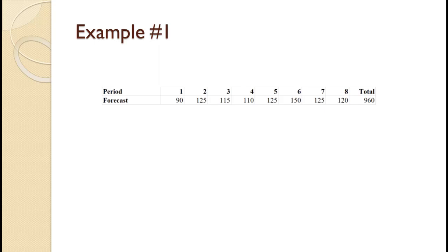Assume that they will have adequate regular time production capacity to handle all of the production and there will be no hiring and layoffs. Regular production costs $10 per unit. Inventory holding cost is $1 per unit per period. Back order cost is $2 per unit per period. Schedule production and cost out the plan.